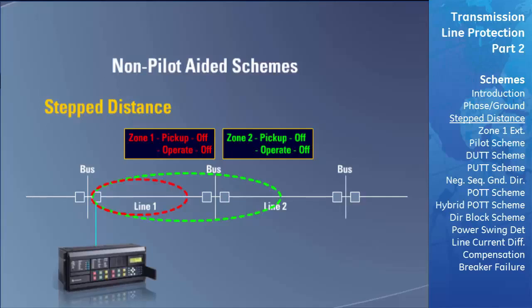If a fault occurs in the end zone region of the transmission line, the two zones act differently. The fault does not lie within zone 1's zone of protection, so zone 1 will not pick up. The fault does lie within zone 2's zone of protection, so zone 2 will pick up. After the zone 2 time delay expires, the zone 2 operate flag changes to the on state and triggers the relay to trip and clear the fault. Once cleared, both the pickup and operate flags of zone 2 turn off.